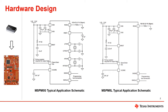Let's start with the minimum system circuit for the MSP M0 MCU. On the left, we have the MSP M0 G series, and on the right, we have the MSP M0 L series. We can see that since the G series has more peripherals, such as external crystal, it may require additional circuitry when compared to the L series.